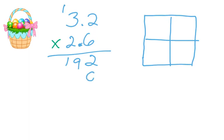6 times 3 is 18, plus 1 is 19. And we put the 0 in the 1s place because we're not multiplying 2, we're multiplying 20, right? Because we're ignoring those decimal points for now.